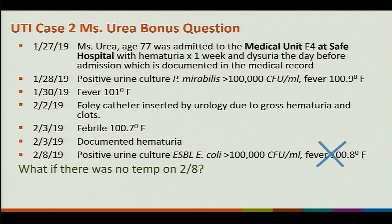Our teaching points: we have a SUTI 1B POA on a patient who is greater than 65 years of age. By using additional symptoms besides fever — when symptoms occur prior to admission, if documented in the medical record and a symptom occurs within the IWP, the DOE becomes day one of admission. Do not change the device association during RIT. Do add a new pathogen. What if there was no temp on 2-8? There would be no SUTI criterion met. And I'm going to hand you off to Agasha.